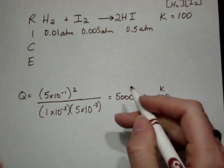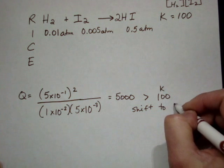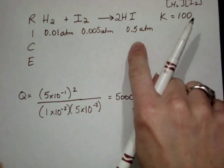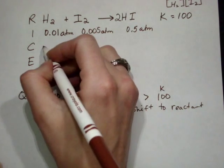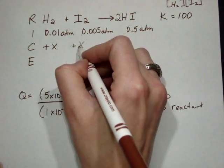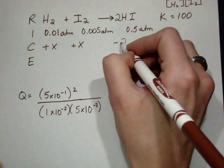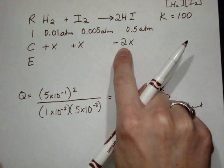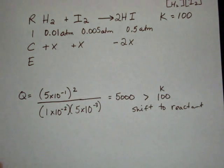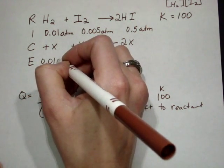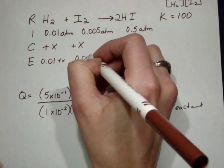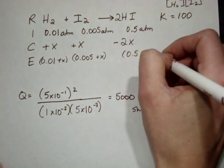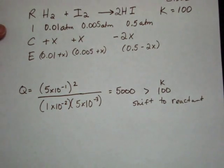We saw that Q was greater than K, so we're going to shift to the reactant side. This time, we're going to be taking away from the hydrogen iodide and forming the hydrogen and the iodine. We're going to be forming equal amounts of hydrogen gas and iodine gas. We have to use the coefficient, so minus 2x for the hydrogen iodide, plus x and plus x for the H2 and the I2. So, we have 0.01 plus x, 0.005 plus x, and 0.5 minus 2x.